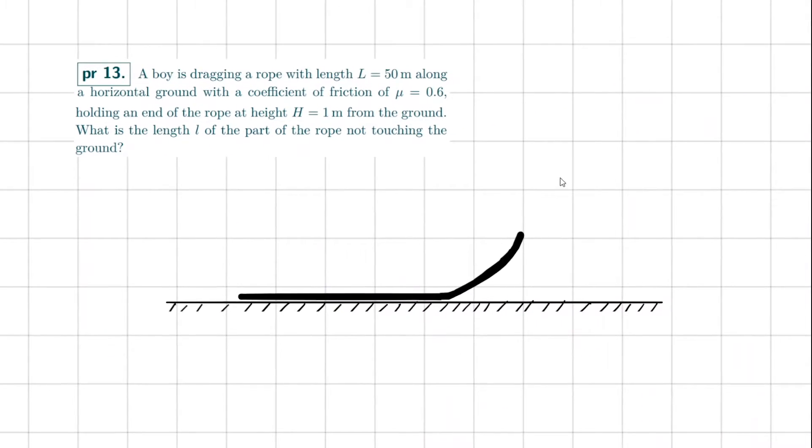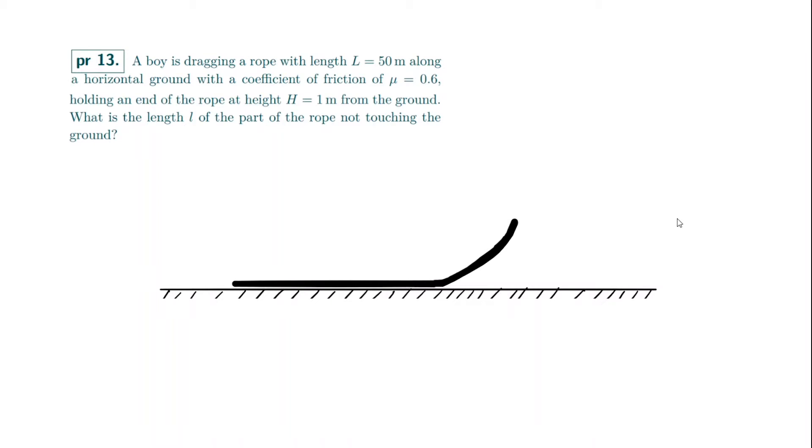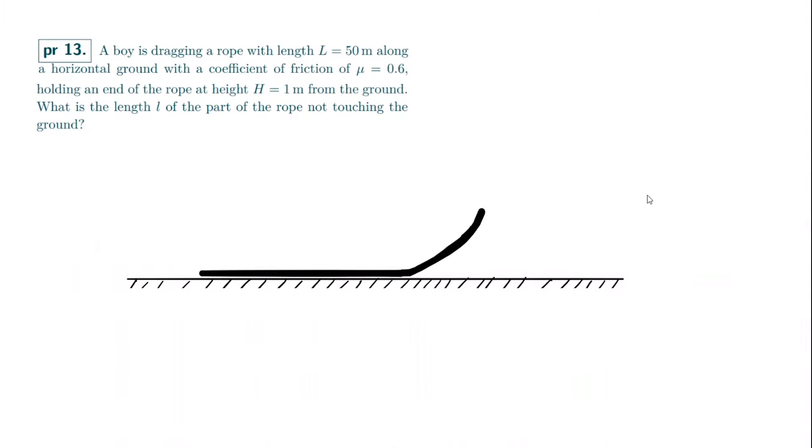Let's move on to problem number 13. A boy is dragging a rope with length L equals 50 meters along a horizontal ground with coefficient of friction mu equals 0.6. Holding an end of the rope at height h equals 1 meter from the ground. What is the length l of the part of the rope not touching the ground? So first thing to notice here is the 1 meter here and the 50 meter here. The length is much longer than the actual height it is held up. Which means it will actually not look like what in the drawing I've prepared. But it will look a lot flatter. But this is exaggerated so I can kind of just say what's going on here.